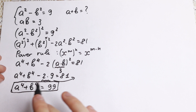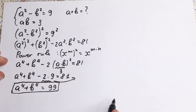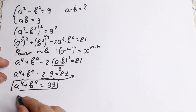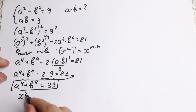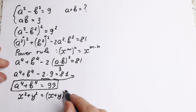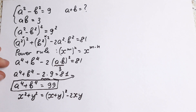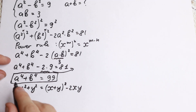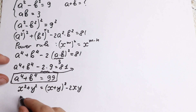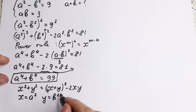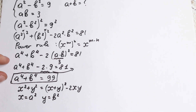Now we need a really important identity: x² + y² equals (x + y)² minus 2xy. We really need this identity right now. We don't have x² and y² directly — we have a² and b². So let our x equal a² and our y equal b², and we work with those values.